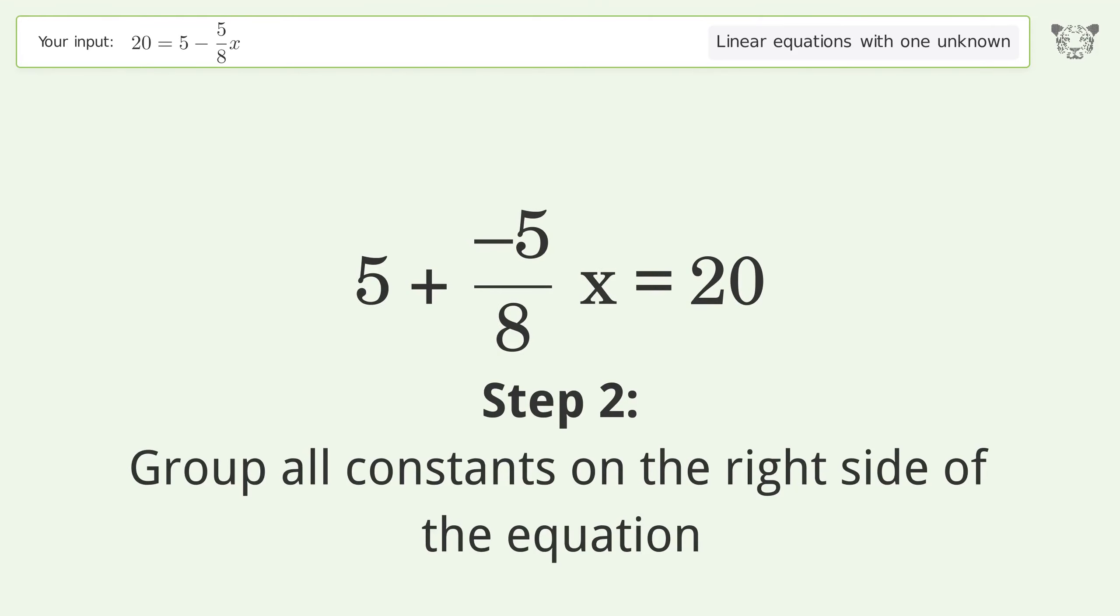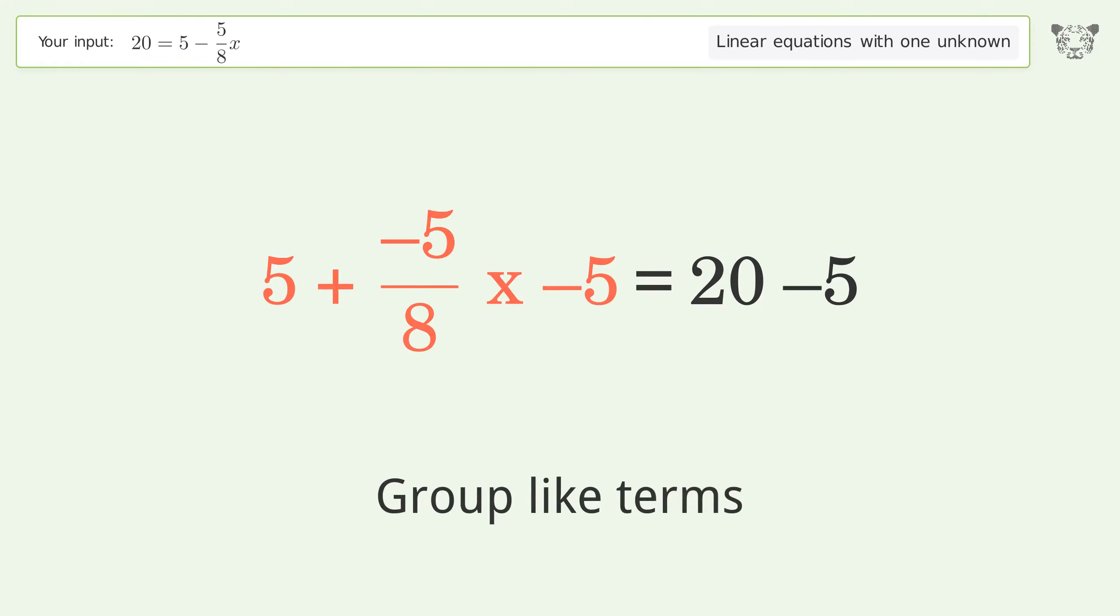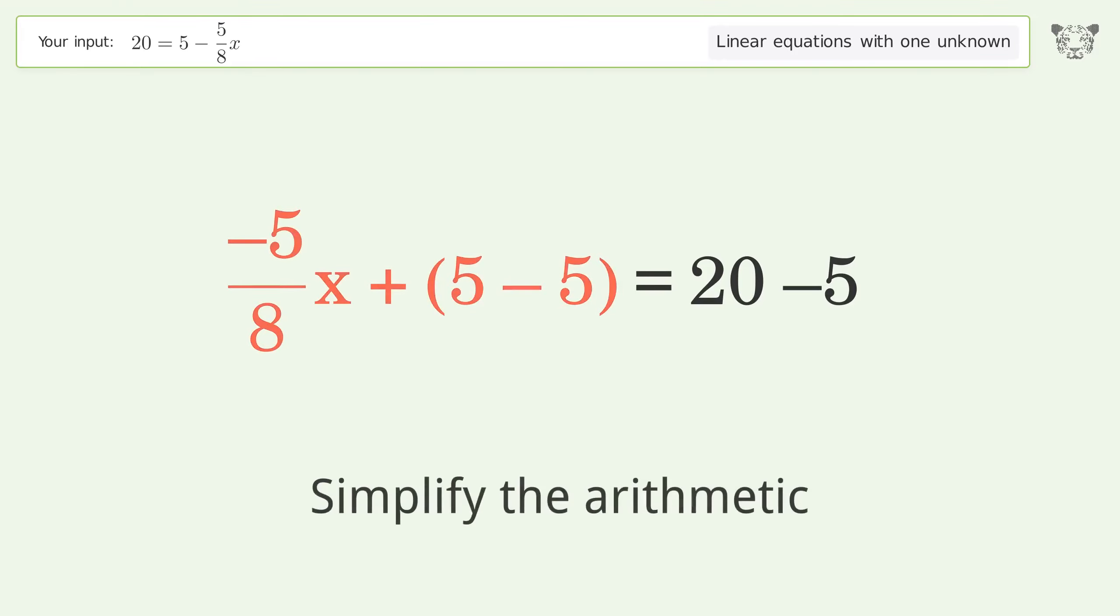Group all constants on the right side of the equation. Subtract 5 from both sides. Group like terms. Simplify the arithmetic.